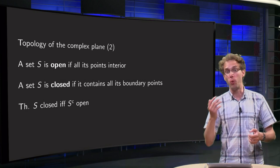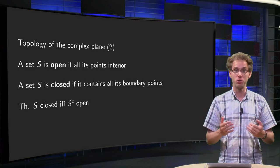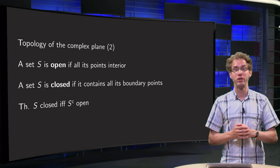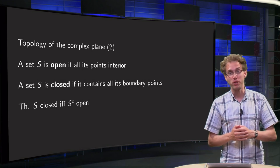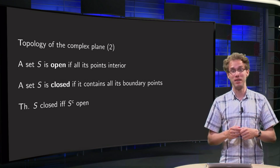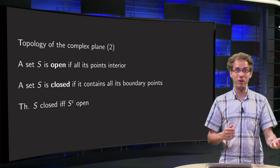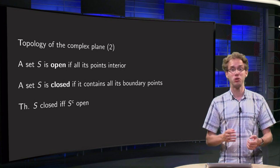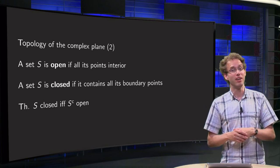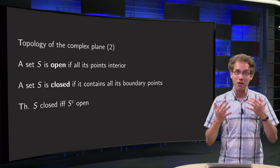A door or a window is either open or closed. In mathematics we have the notion of open and closed too — this is a property of a set. But in mathematics, sets can be neither open nor closed, or both open and closed, or open or closed. This is quite counterintuitive, so let's take a look at these properties to find out how this is possible.